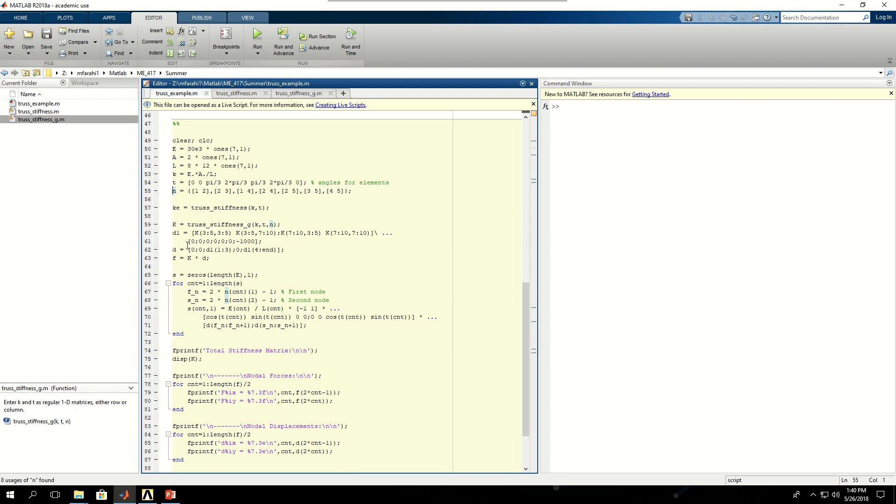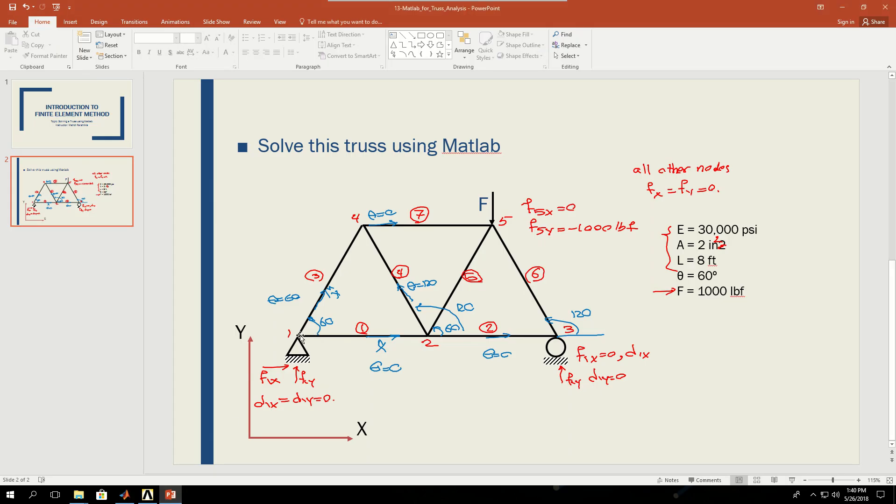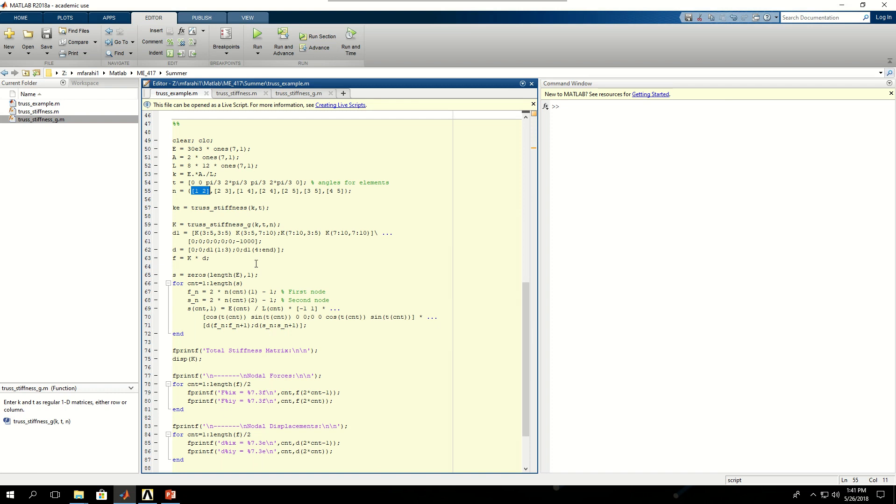Then I define the N as the end nodes per element. So this is for element one, which has nodes one and two attached to it. Let's go back to the PowerPoint. Element one is here between node one and node two. And element two is between node two and three. Element three is between node one and four. Element four is between node two and four. And that's how I've made up these end nodes per element. So I have seven one by two matrices here, and each one has the two end nodes per element.